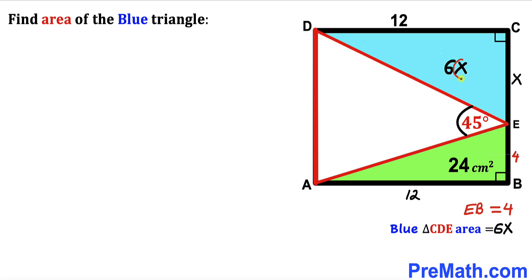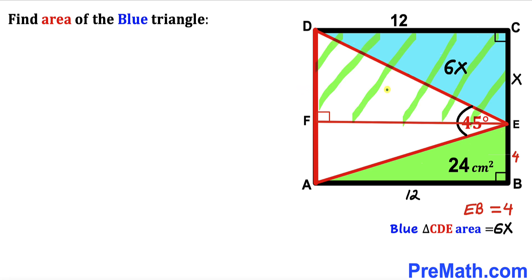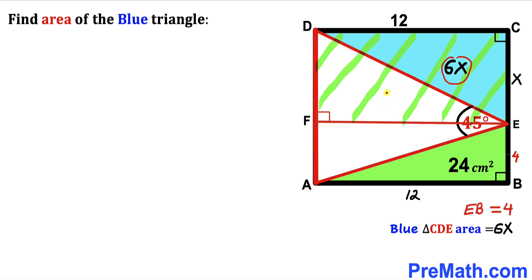Our task is to find the value of X to get the exact area of the blue triangle. I have dropped perpendicular EF onto side AD. Focusing on rectangle FECD with its main diagonal ED, we can see that this diagonal divides the rectangle into two equal areas. So the area of the blue triangle CDE equals the area of the adjacent white triangle, both equal to 6X.